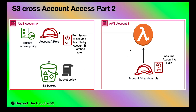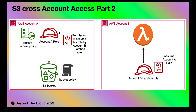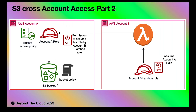In a nutshell, the Lambda will have a Lambda role with the capability to assume account A's bucket role. That bucket role will have a trust relationship with the Lambda role, and then it can access the bucket and list its objects. We've also set up a bucket policy, which we'll discuss at the end of the video — don't worry about it for now.